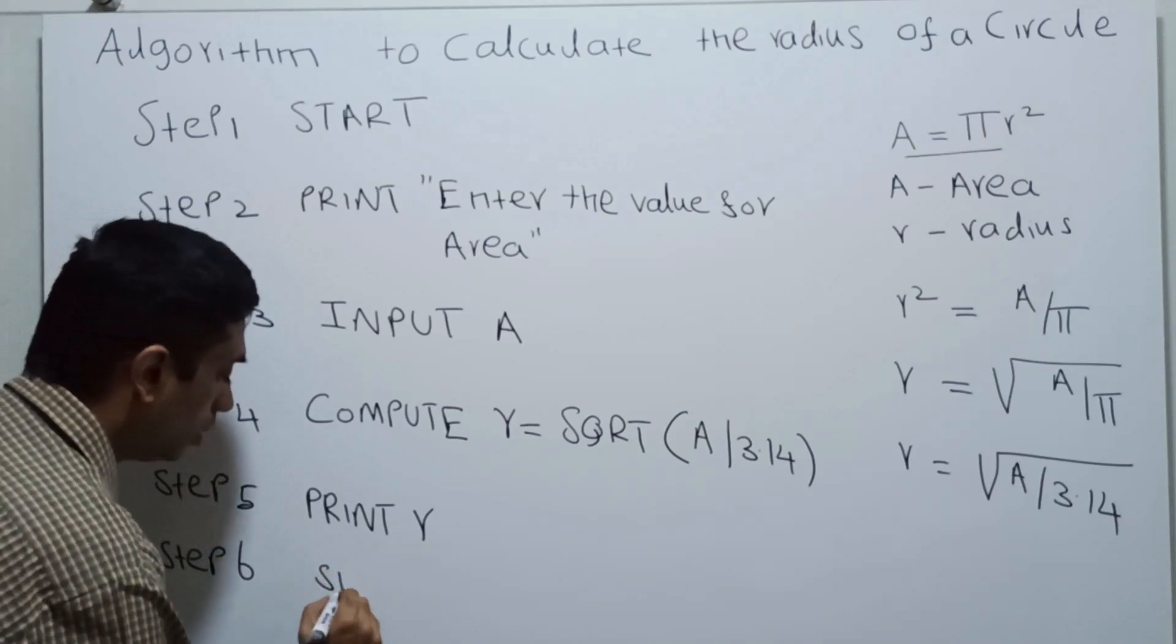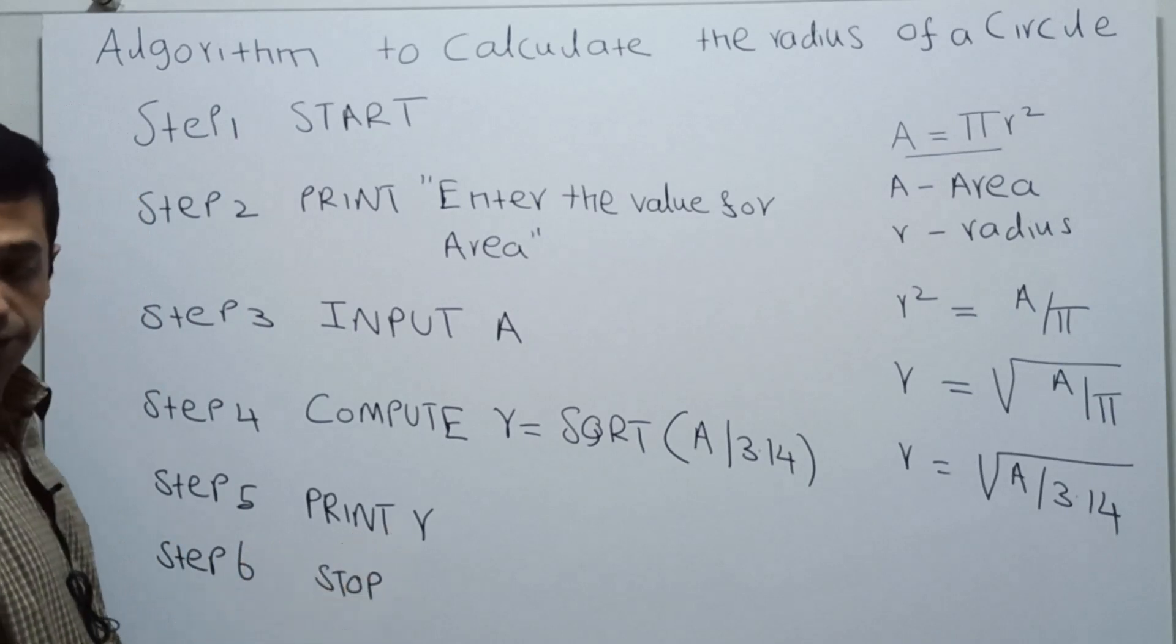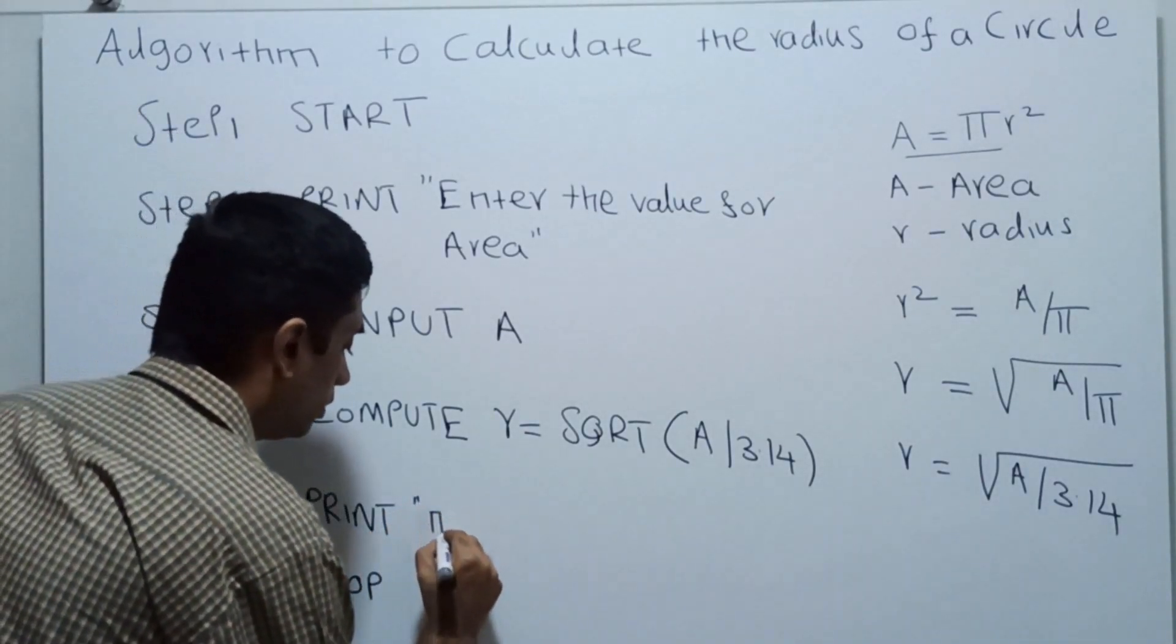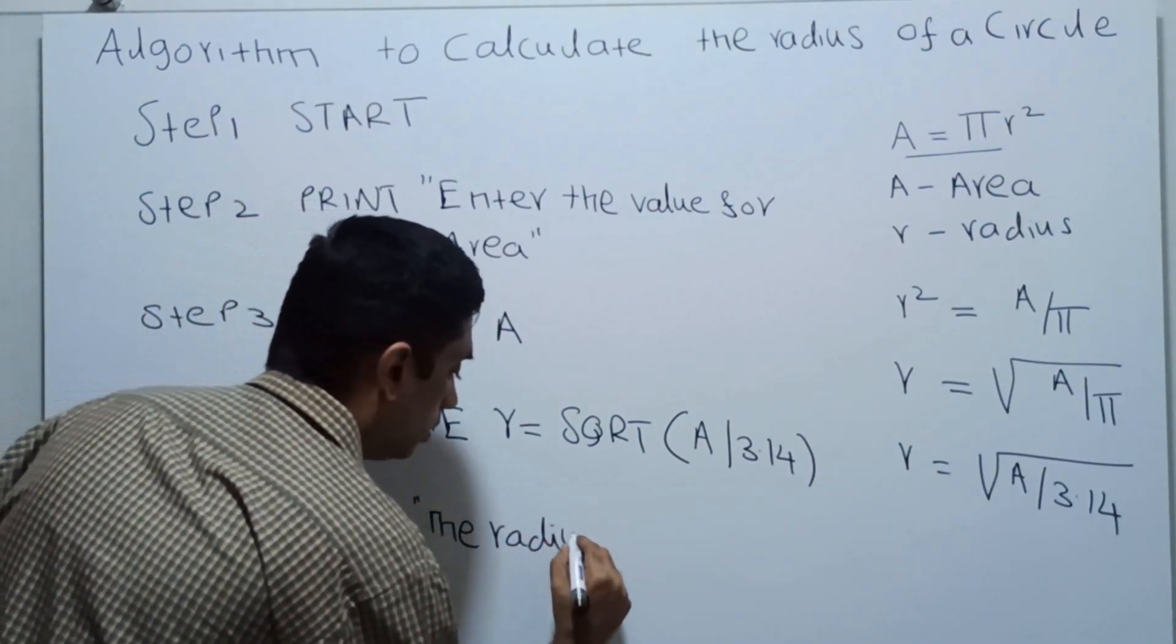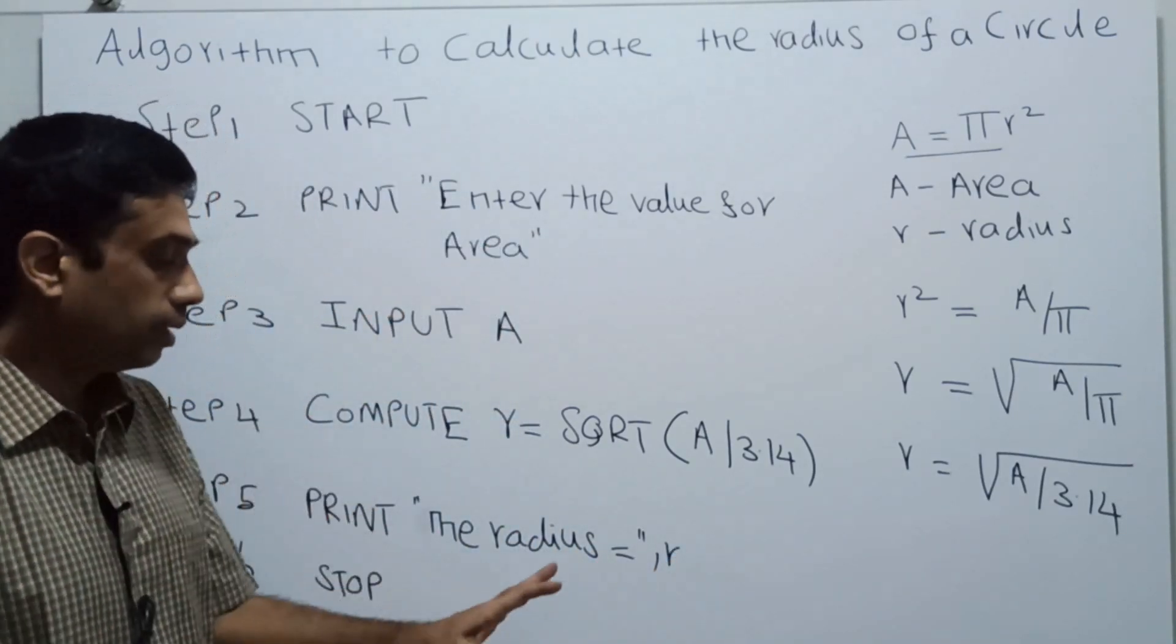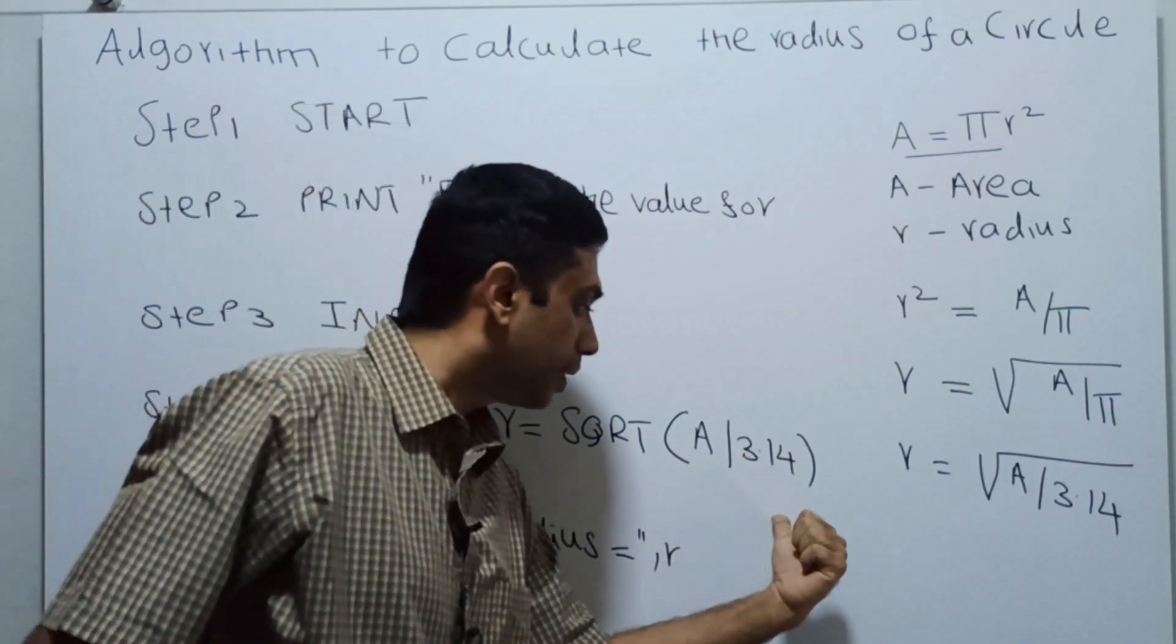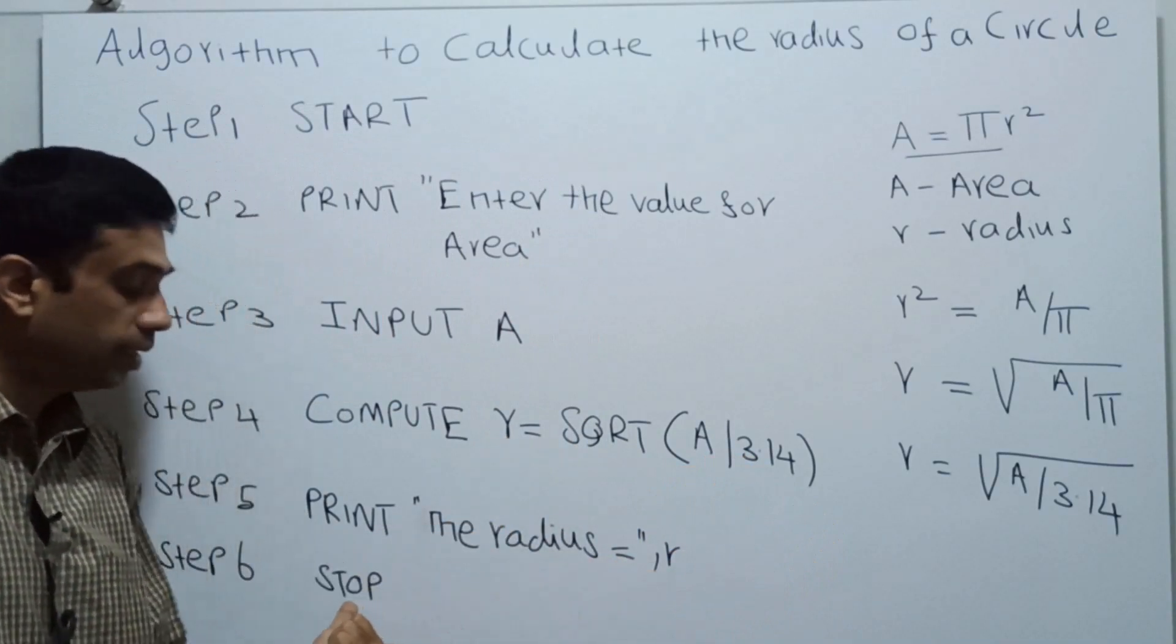Step 6: STOP. We can make a small change. When we calculate the value of radius, I print the value of the radius, and this is the end of the algorithm. That's it.